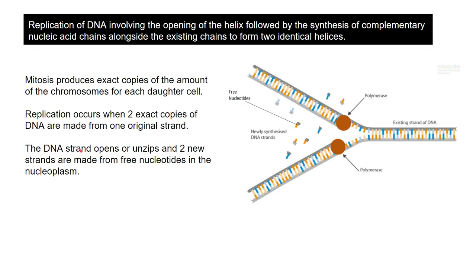The DNA strand opens or unzips, and two new strands are made from free nucleotides that are present in the nucleoplasm - the liquid inside the nucleus. The existing old DNA strand opens, exposing some bases, and these free nucleotides match in to the exposed bases, building up new strands. The enzyme responsible for this is called DNA polymerase - this is an example of an anabolic enzyme, building up a large molecule from smaller pieces.